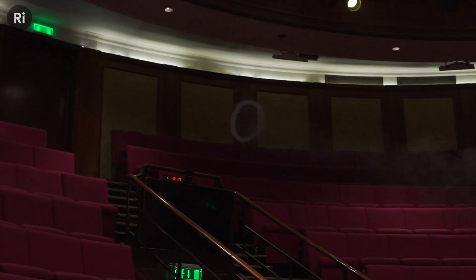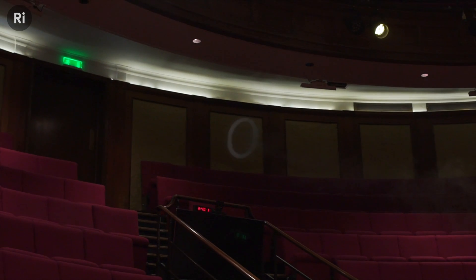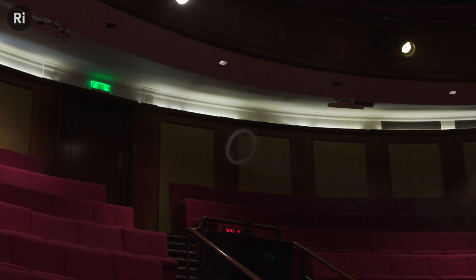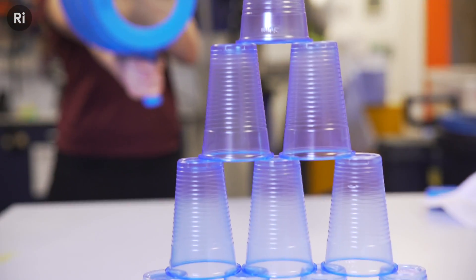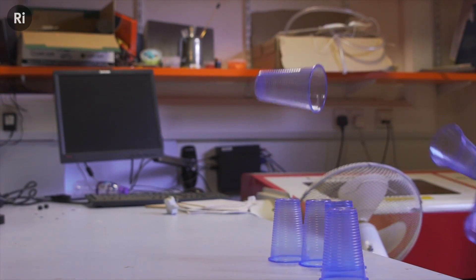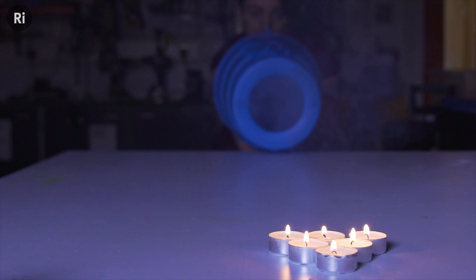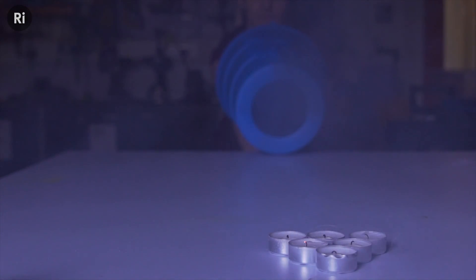This means that even though vortex rings can travel a really long way, they don't lose much kinetic energy as they go. So I can use an air cannon like this one to knock over unsuspecting plastic cups. You can also blow out candles. And if you add butane, you can do this.